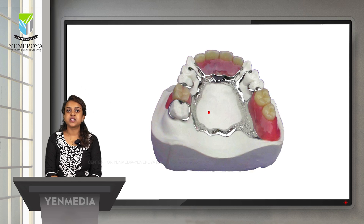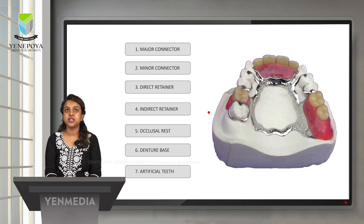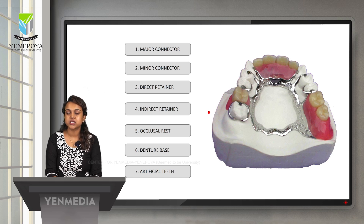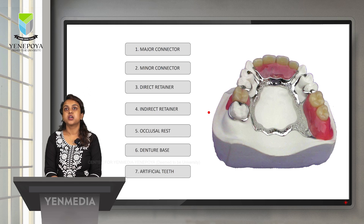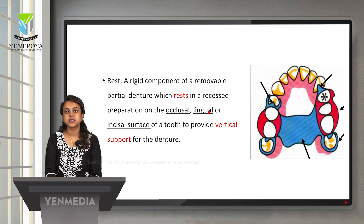When designing, we need to consider all the components of the removable partial denture. There are seven components, and each plays an important role in counteracting and transferring forces. The components are: major connectors, minor connectors, direct retainer, indirect retainer, occlusal rest, denture base, and artificial teeth. One of these components is the rest.